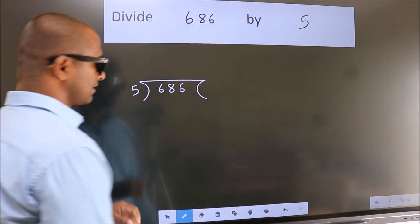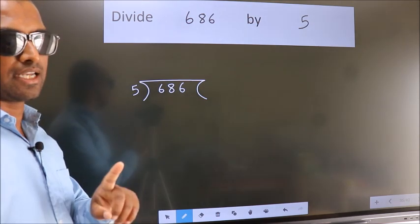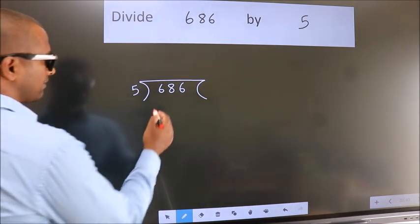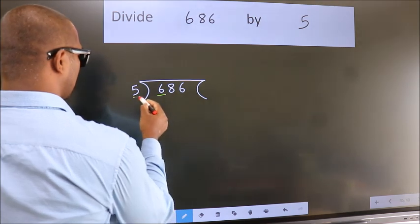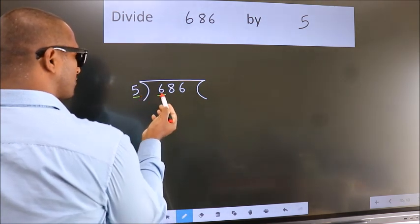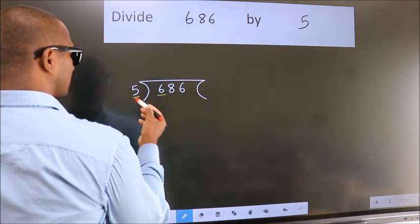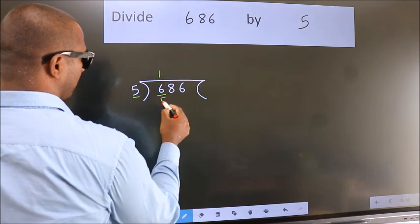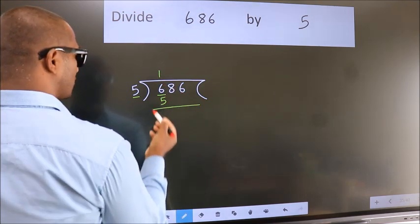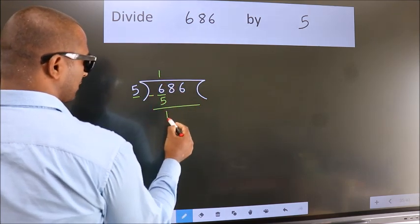This is your step 1. Next, here we have 6, here 5. A number close to 6 in 5 table is 5 once 5. Now we should subtract. We get 1.